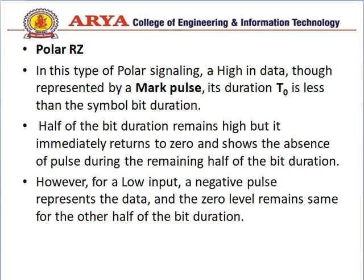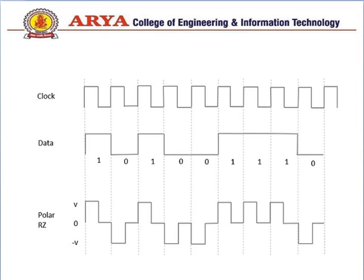Next is polar RZ. In this type of polar signaling, a high input data is represented by a marked pulse whose duration T0 is less than the symbol bit duration — half the bit duration remains high but it immediately returns to 0. For a low input, a negative pulse represents the data and the 0 level RZ remains the same for the other half of the bit duration. In the diagram, for 1 the first half is positive and the next half is negative; for 0 it goes negative then back, and so on.